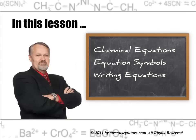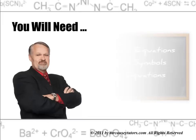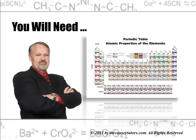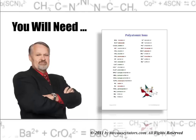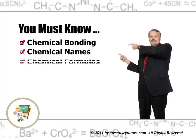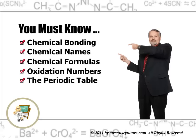In this lesson we'll cover chemical equations, equation symbols, and writing equations. This is a very important skill, so pay attention. Be sure you have all the necessary things: you need a periodic table and your polyatomic ions list. You must know chemical bonding, chemical names, chemical formulas, oxidation numbers, and how to use the periodic table. It's very important that we get this information down.